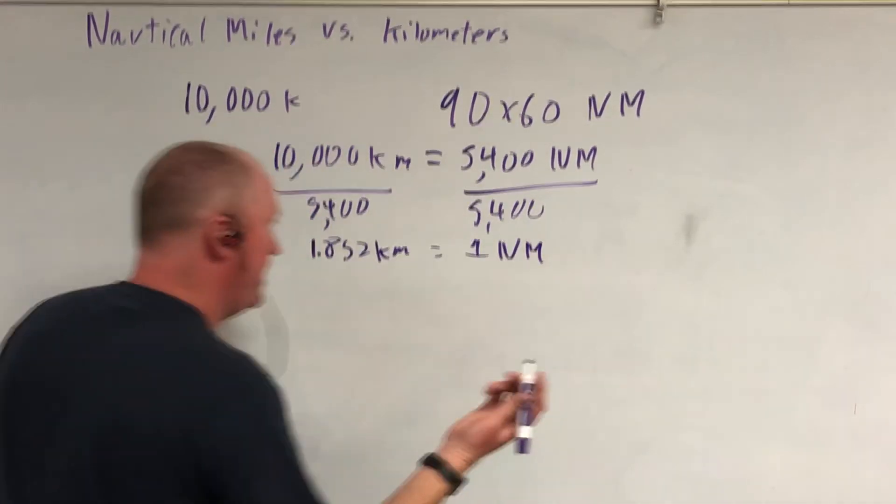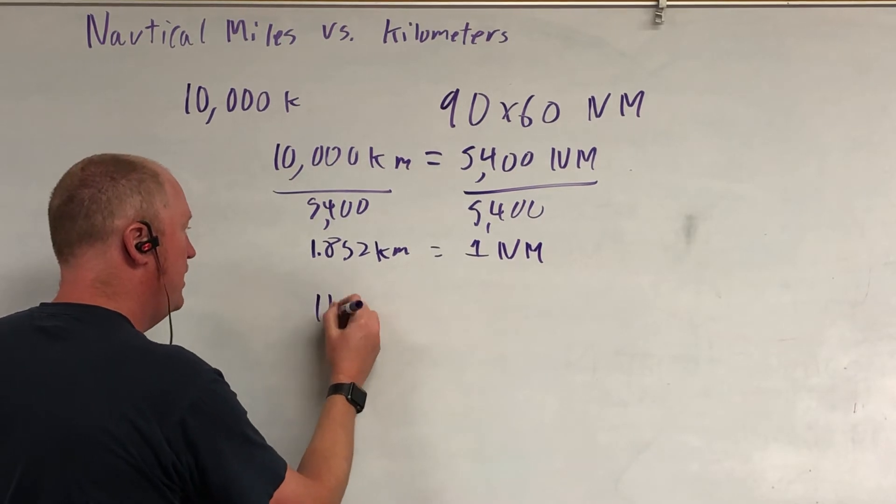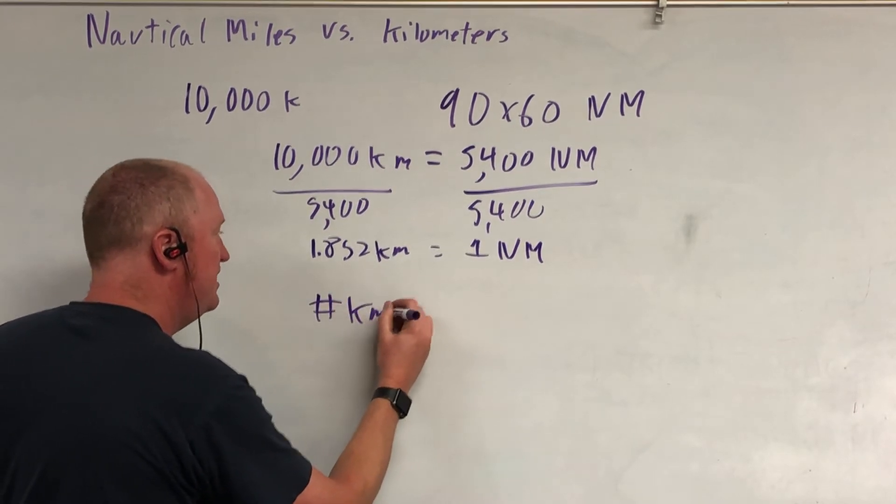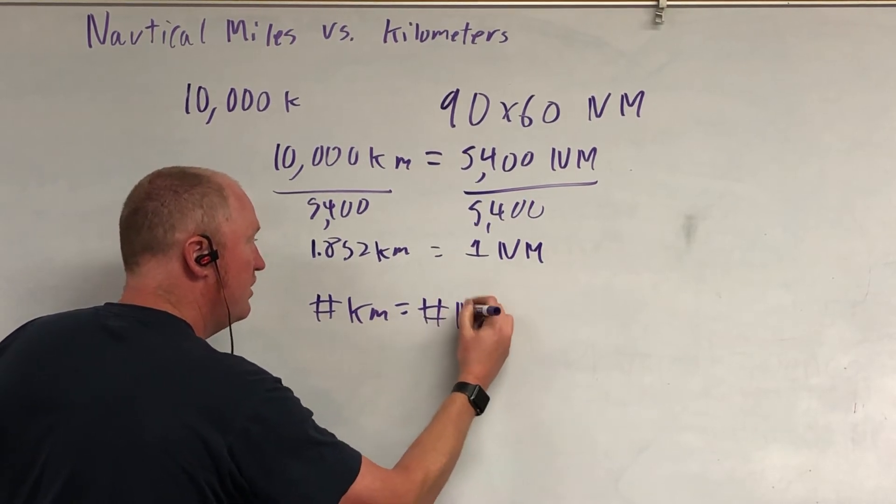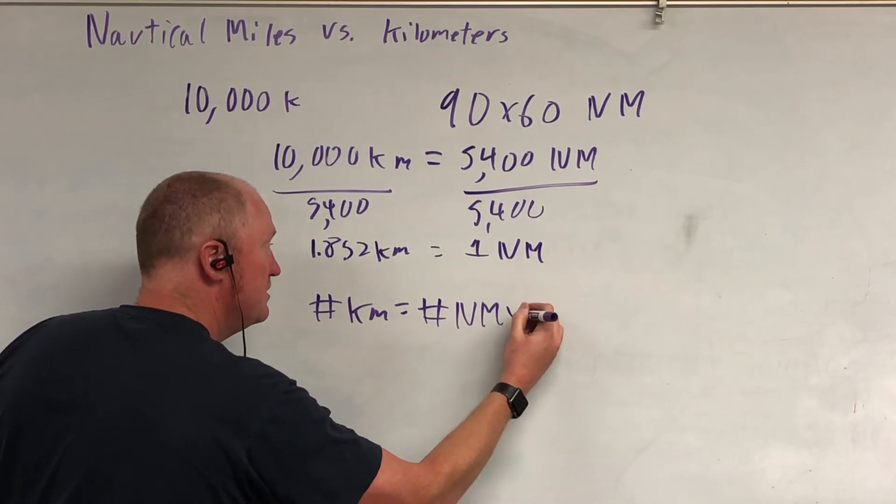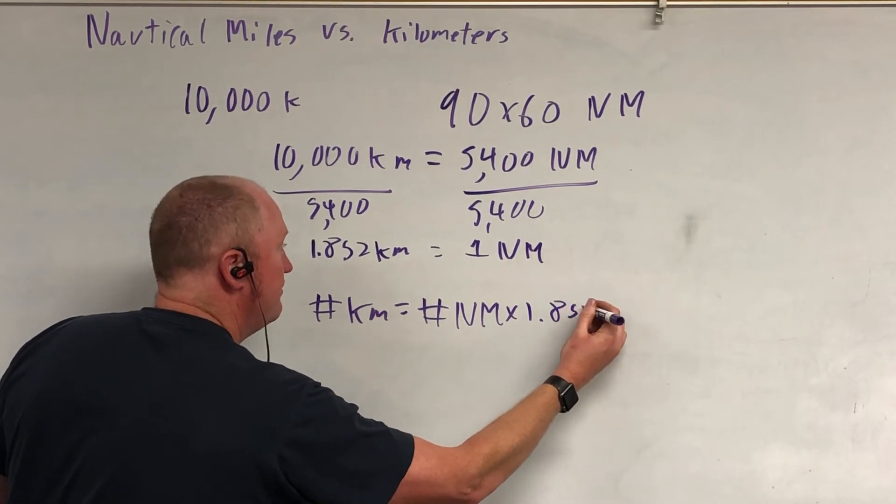1.852 kilometers is equal to 1 nautical mile. So if you want to convert the two, you've got a number.